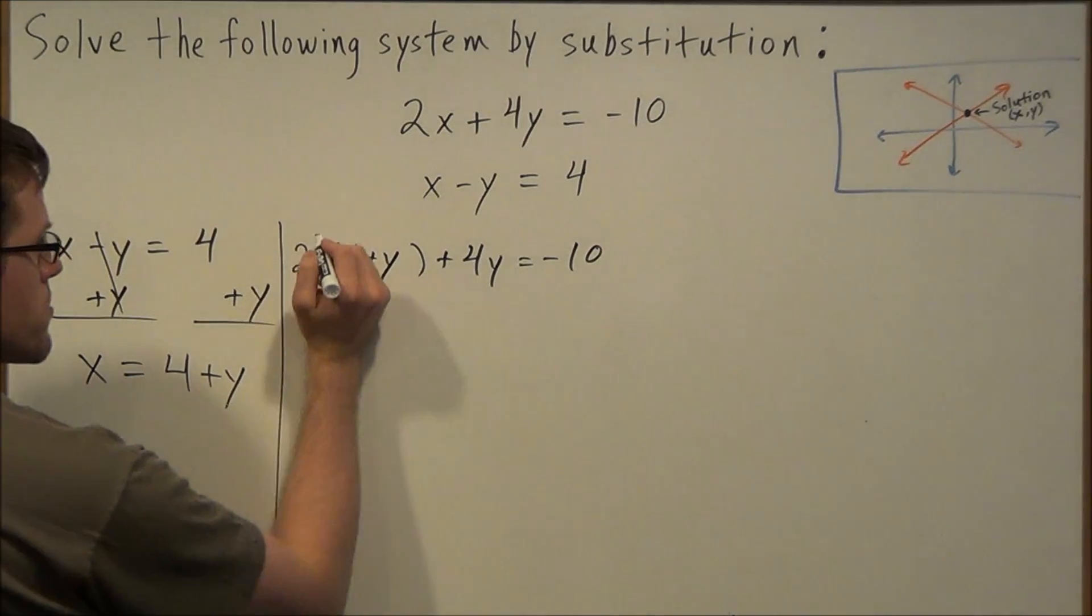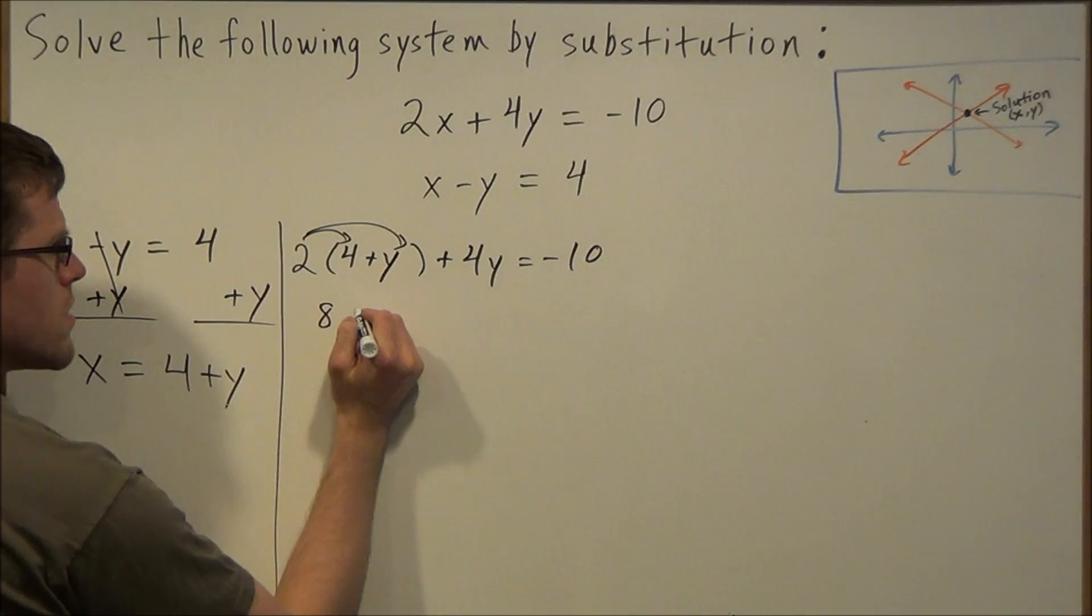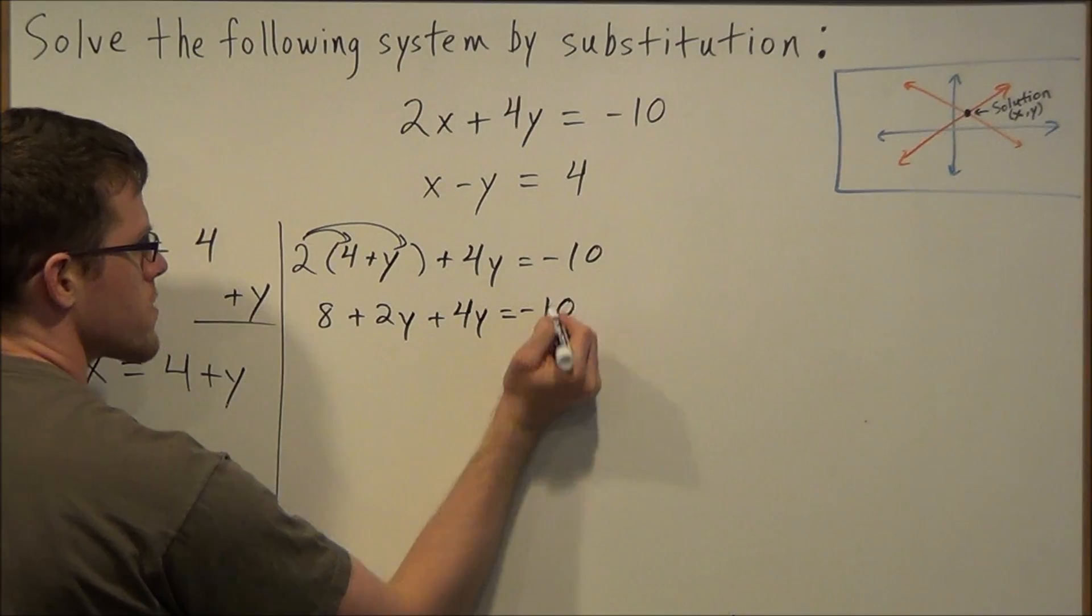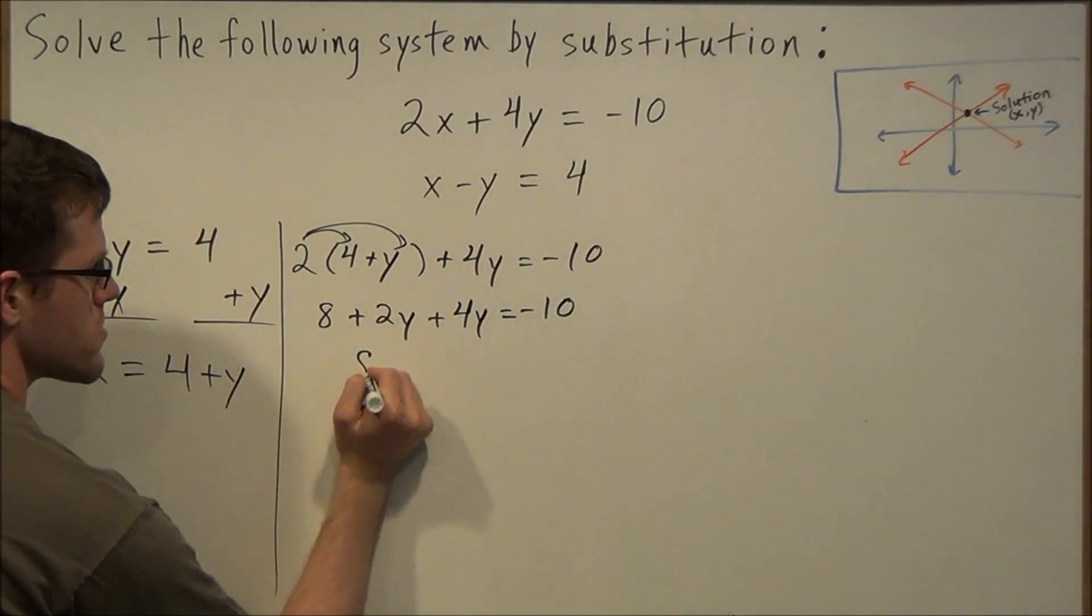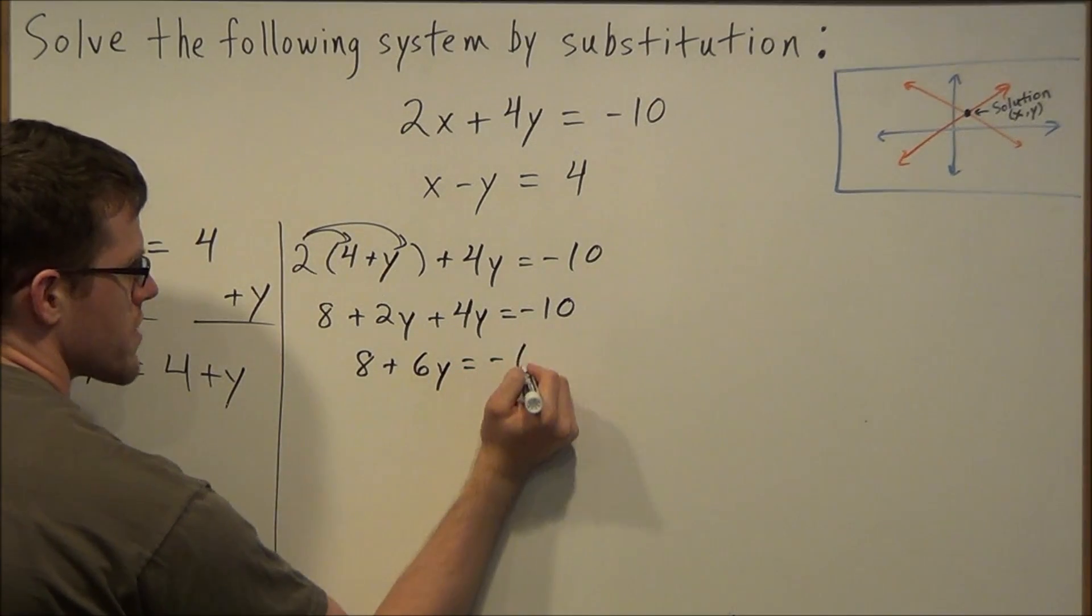So for the next line, we're going to distribute. We'll have 8 plus 2y plus 4y equals negative 10. Combine like terms. We have 8 plus 6y equals negative 10.